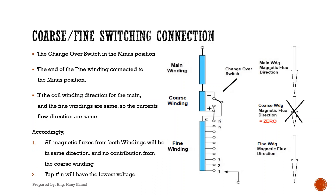But if the changeover switch is in the minus position, the end of the fine winding is connected to the minus position, so the coarse winding is excluded from the circuit. If the coil winding direction for the main and fine windings are the same, the current flow directions are the same. Accordingly, all magnetic fluxes from both windings will be in the same direction, with no contribution from the coarse winding. Tap number N will have the lowest voltage.